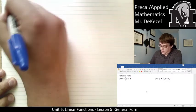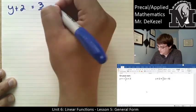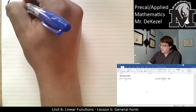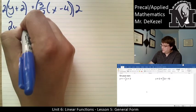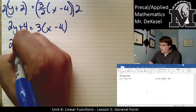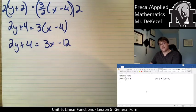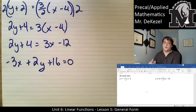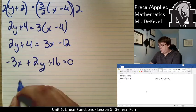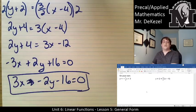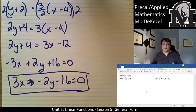Try-it solution two: y + 2 = 3/2(x - 4). Multiply everything by 2: 2y + 4 = 3x - 8, then expand to 2y + 4 = 3x - 12. Move everything left: -3x + 2y + 16 = 0. Since A must be positive, flip all signs: 3x - 2y - 16 = 0. That is the general form.